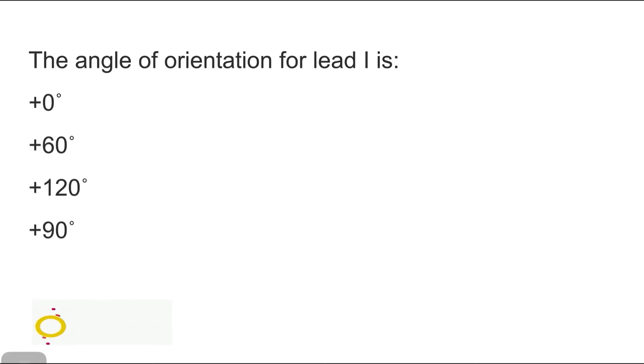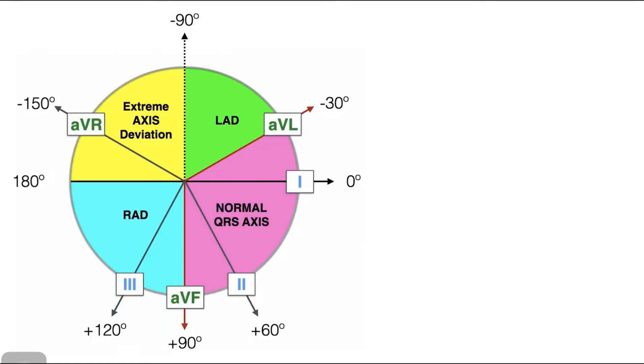The orientation for lead 1 is. This is the cardiac axis diagram. Lead 1 has 0 degree orientation. You have to remember the orientation of all the leads. Which is AVL minus 30 degree, 2, 3, AVF with plus 60, plus 90, plus 120, and AVR with minus 150. So we have to remember the orientation of all the frontal leads and special leads.